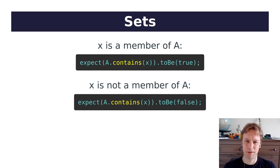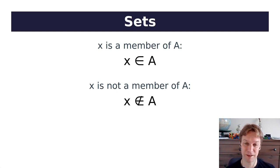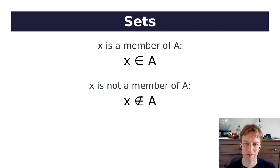Here are some Jest-style assertions. If X is a member of A, then we'd expect that when we call the contains method on A, asking whether X is in it, the answer will be true. If it's not a member, the answer will be false. So there's some code — we're going to use programming ideas to understand maths. And here's some maths vocabulary: if X is a member of A, we write X and then this curly E symbol and then A. If it's not a member, we draw a line through it. So X ∈ A means X is a member of A.